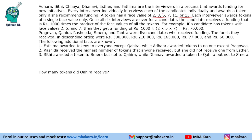Once all 6 interviews are over for a candidate, the candidate receives funding that is 1000 times the product of the face values of all the tokens. For example, if a candidate has tokens with face values 2, 5 and 7, they will get a funding of 1000 × 2 × 5 × 7, which is 70,000.